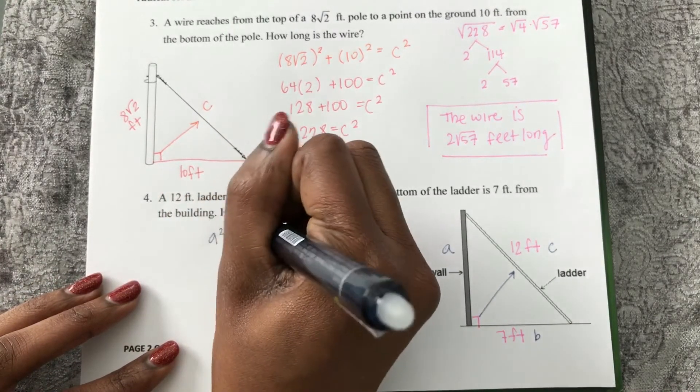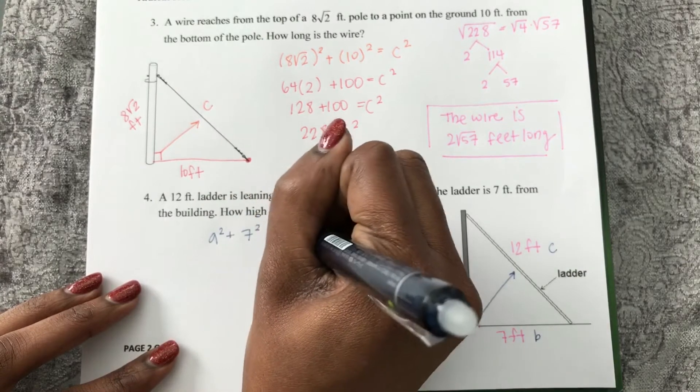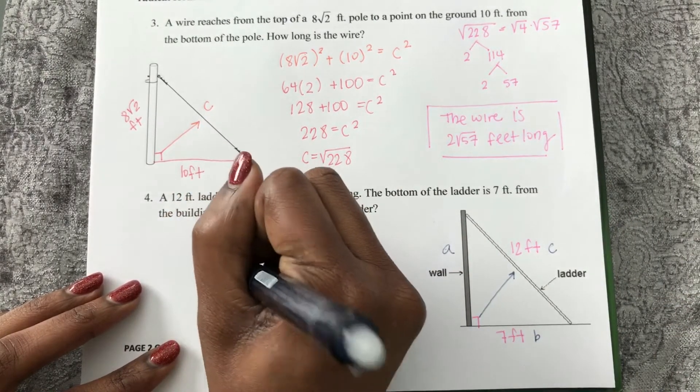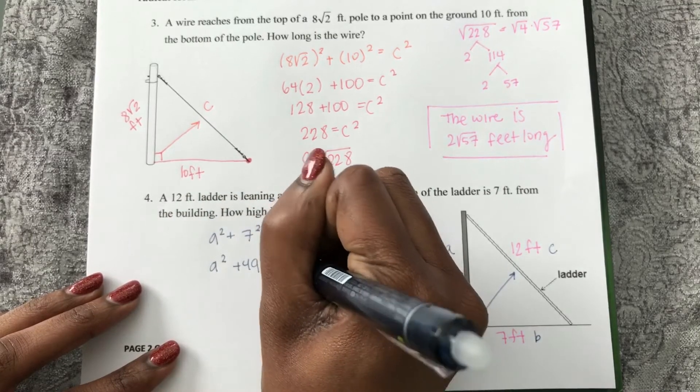A squared plus 7 squared equals 12 squared. So I have A squared plus 49 equals 144.